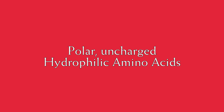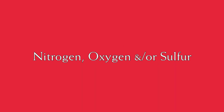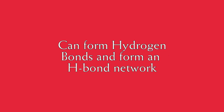The next group we're going to talk about is the polar amino acids — the non-charged polar amino acids. These are going to be hydrophilic. We're going to have oxygen and nitrogen in their R-chains, and they are going to be able to form hydrogen bonds with the aqueous environment and with each other, forming a hydrogen bond network. Within the polar group, we can have oxygen, nitrogen, or both, and even a terminal sulfur group with cysteine.